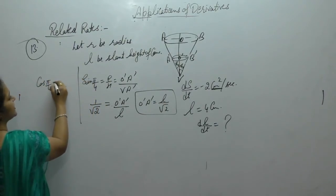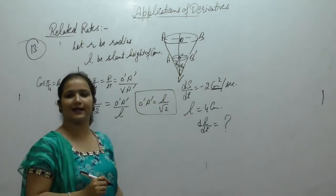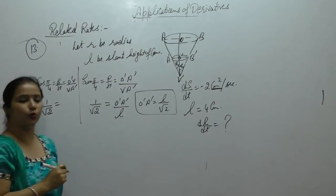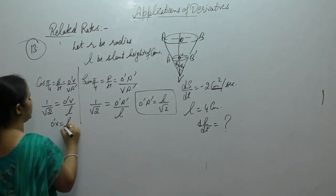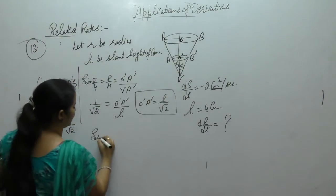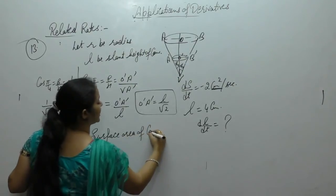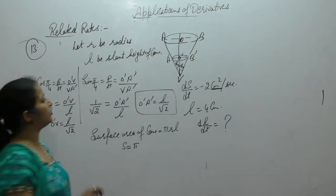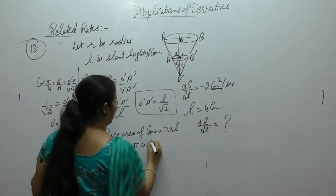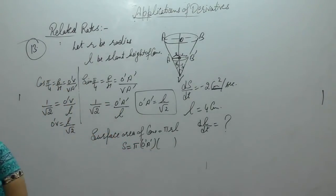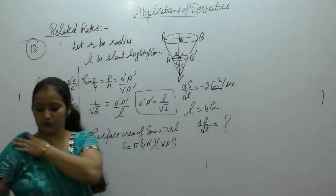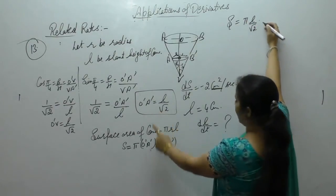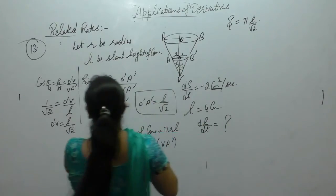Now if we look at cosine: cos is base upon hypotenuse. O'V upon VA' — cos π/4 is also 1/√2, and VA' is slant height, so O'V = l/√2. Now we know the surface area of a cone is πrl. The radius is O'A' = l/√2 and slant height is VA' = l, so surface area S = π × (l/√2) × l = πl²/√2.